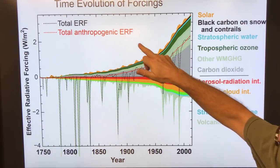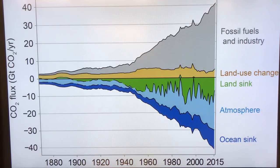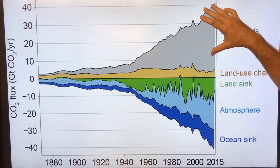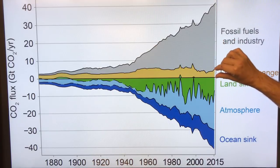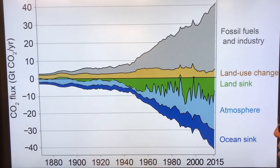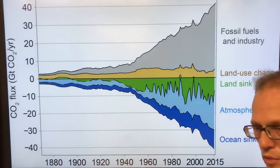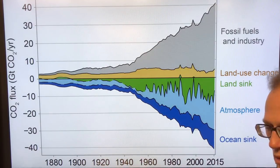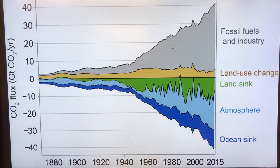Adding all those up gives the total effective radiative forcing over time since the beginning of the industrial revolution. These are the CO2 fluxes in gigatons of CO2 per year — the components from fossil fuels and industry are ever increasing. This is the land use changes, land sinks, the atmosphere, and the ocean sinks. The problem is that CO2 concentrations keep increasing in the atmosphere, rising about 3.3 parts per million, and the sinks — the oceans and forests absorbing CO2 — are weakening, which is very bad news.